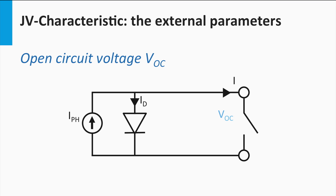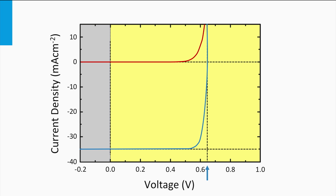Let's consider that the terminals of an illuminated solar cell are not connected. This situation is called an open circuit. In open circuit, the solar cell does not produce any current and solely produces a voltage. This voltage is called the open circuit voltage. It is easily recognized in the JV plot by the intersection of the JV curve with the horizontal axis corresponding to a current density equal to zero.